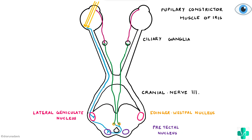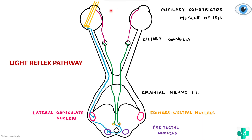That is how we have constriction of the pupil. The direct light reflex occurs because when light falls, it is transmitted via the optic nerve, reaches the pre-tectal nucleus, and via the Edinger-Westphal nucleus and short ciliary nerve, there is constriction of the pupil of that eye. Since information also goes to the other Edinger-Westphal nucleus, there is constriction of the pupil on the other side too — that is the consensual or indirect light reflex.